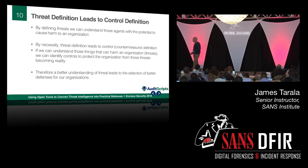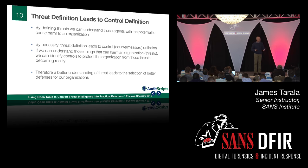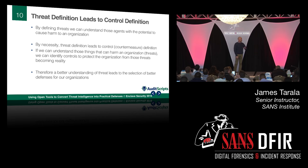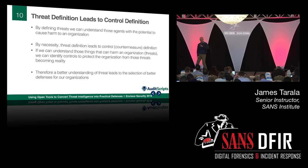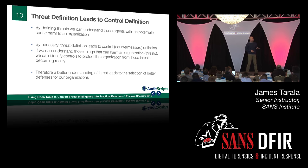Threat identification should lead to control or countermeasure definition. If we know how bad behavior is taking place and what evil looks like, we should be able to put detective controls in place to stop it and hopefully even prevent some. This isn't a perfect process — ISAC data is great but there are delays. But even if we only have access to some basic data sets, we can use that to weed out noise and focus our attention on what's really unique in our environment. We can use automation to limit noise and focus on what matters.